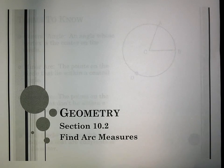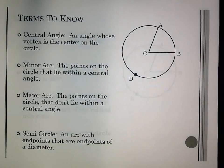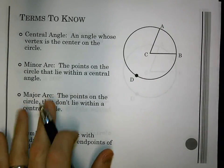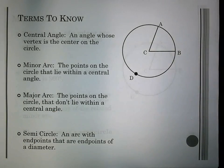So, this is section 10.2. We're looking at finding arc measures. This is filmed in front of a live studio audience, third period. We're going to look at an angle that we're going to relate it to, and that is a central angle.